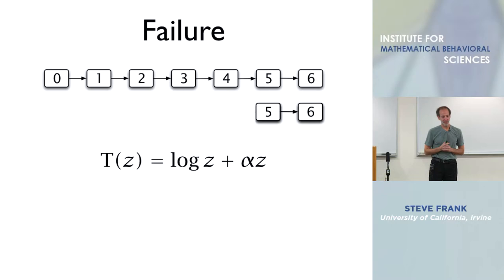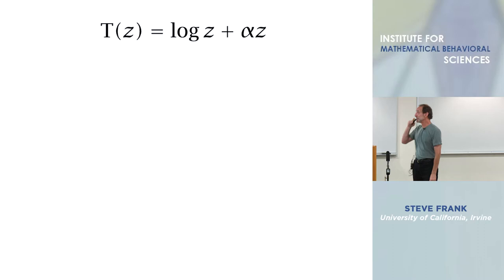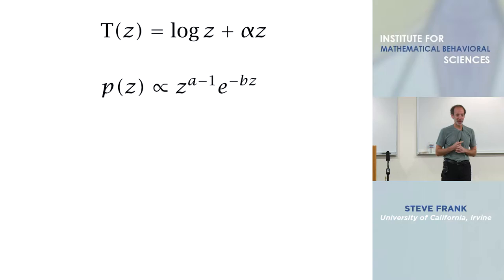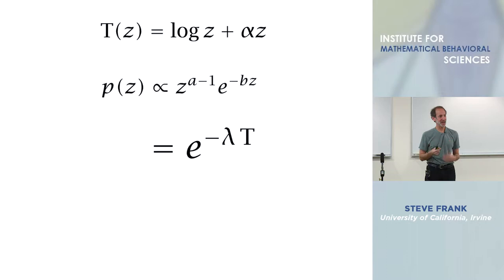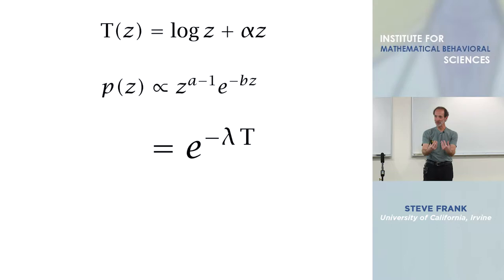We can write the log-linear scale mathematically: T is the natural metric or scale, Z is age. The expression log Z plus alpha Z captures this: when Z is small the log term dominates; when Z is large the linear term dominates. That's the mathematical form for the gamma probability distribution — a product of a power law and an exponential. If we write the gamma distribution as e to the minus lambda T, it turns out T is exactly that log-linear scaling relation. Plug the log-linear scaling relation into the canonical form e to the minus lambda T, and you get a gamma probability distribution. A gamma distribution is the pure expression of log-linear scaling in canonical form.